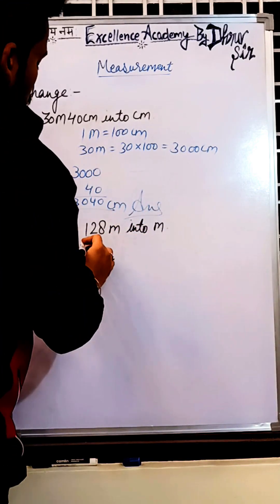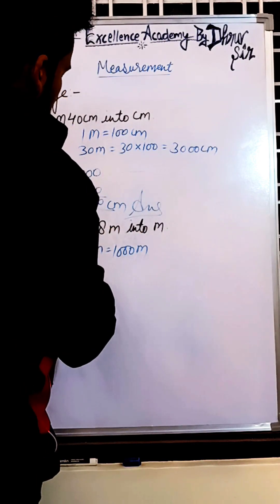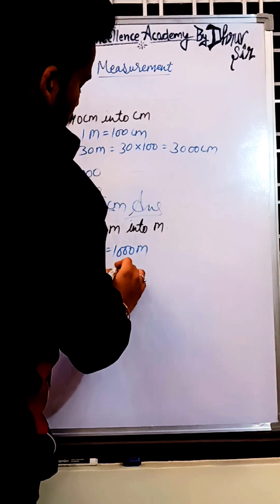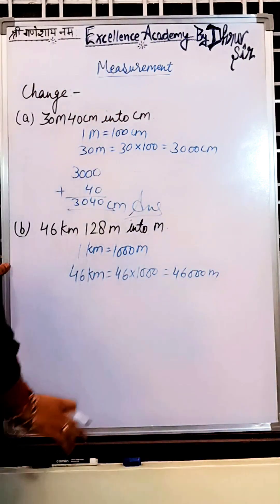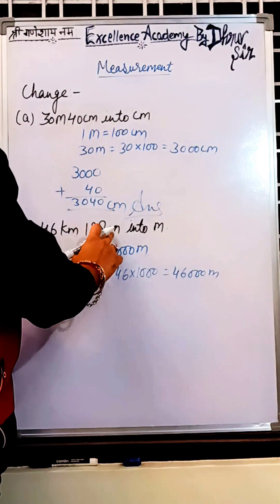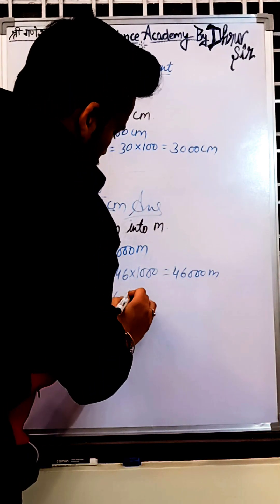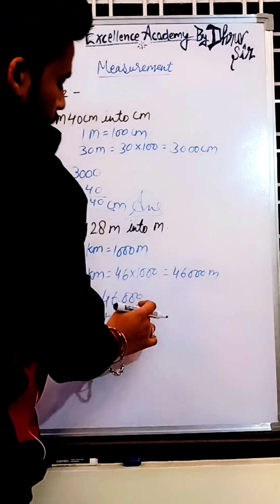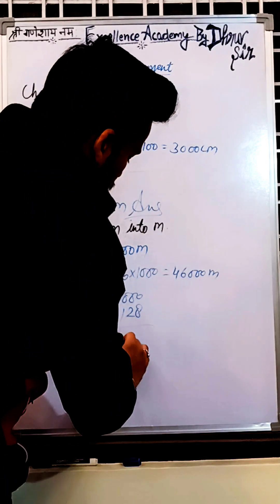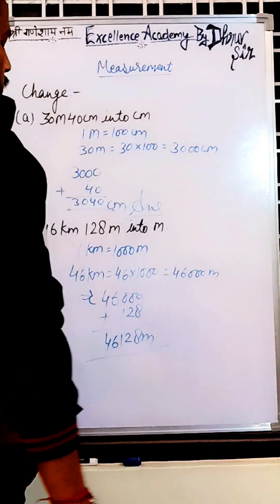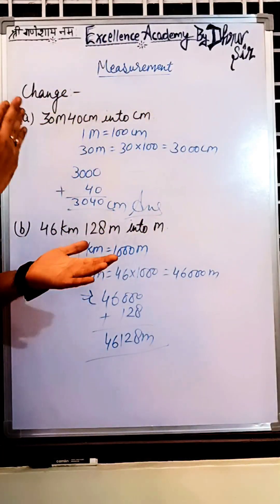Now the second question: 46 kilometer 128 meter into meter. We know 1 kilometer equals 1000 meters, so 46 kilometer equals 46 × 1000 = 46,000 meter. Now we simply add the 128 meters — always start adding from the back, so the answer is 46,128 meter.